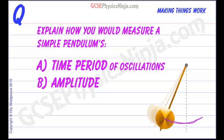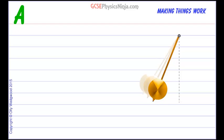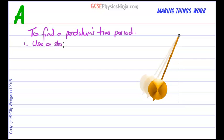So how could we make the measurement more accurate? Let's take a look at a method for finding the time period of a pendulum more accurately. To find a pendulum's time period, first of all, use a stopwatch. And it's quite important to actually state your equipment that you're using when you're explaining an experiment to measure something.